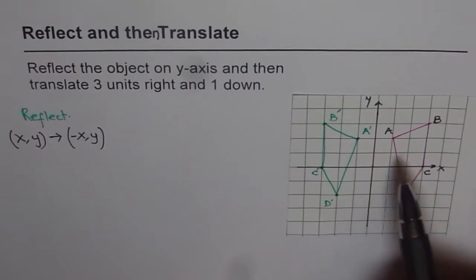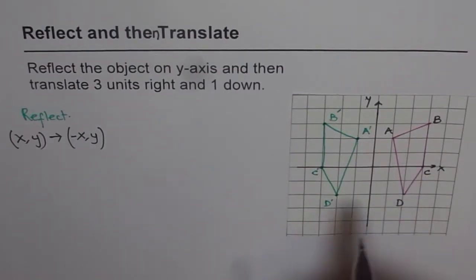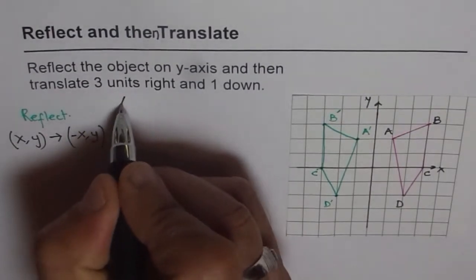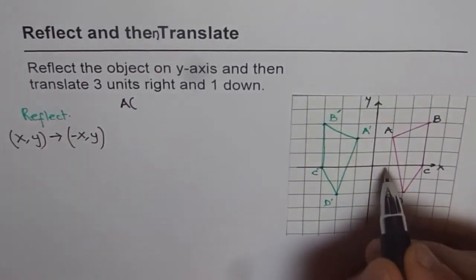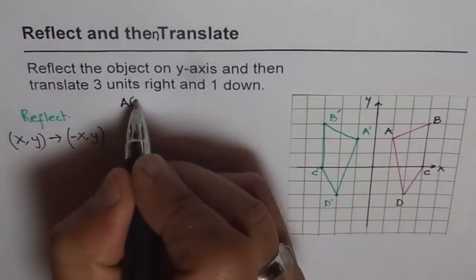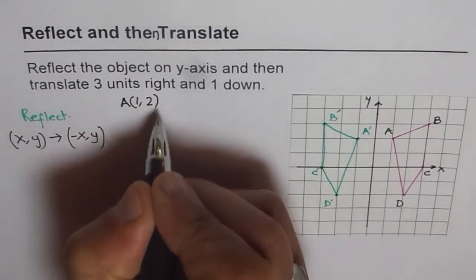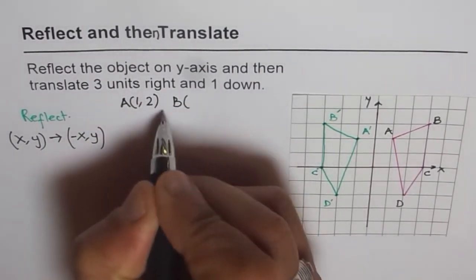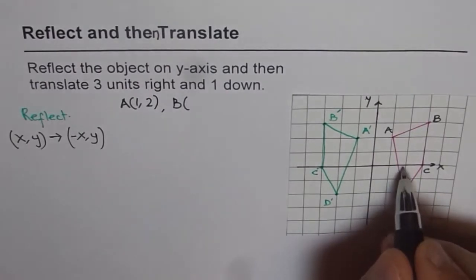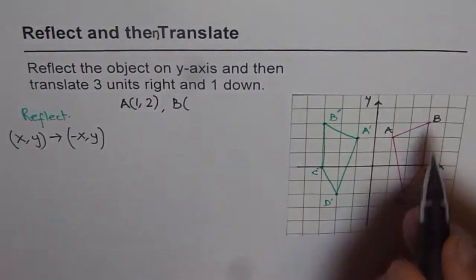We had considered the object A, B, C, D. So let me write down all these objects with their original point locations. A is at (1, 2), one for x and two for y. For B, it is (3, 3).